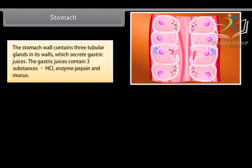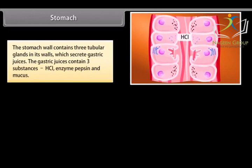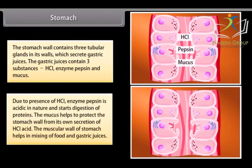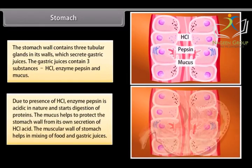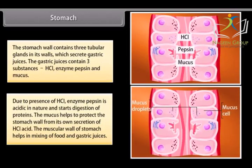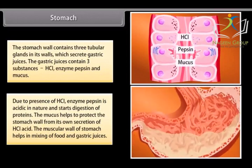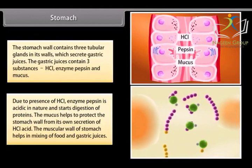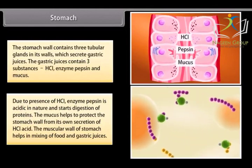The stomach wall contains tubular glands that secrete gastric juices containing three substances: HCl, enzyme pepsin, and mucus. Pepsin is acidic in nature and starts digestion of proteins. Mucus helps protect the stomach wall from its own secretion of HCl acid. The muscular wall of the stomach helps in mixing food and gastric juices.